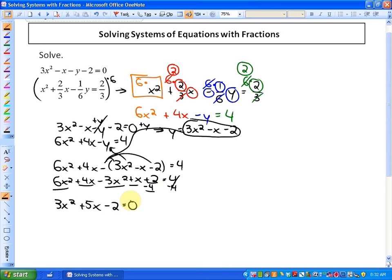You could use the quadratic formula if you'd like, but it's always advisable to try and factor if possible. In this particular case, it is factorable: it will be (3x)(x) and it will be (+2) and (-1). That leaves us with solutions of x = 1/3 and x = -2.